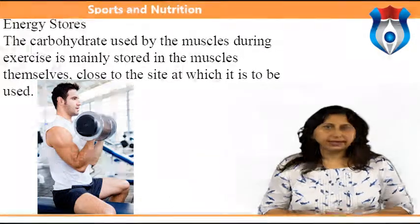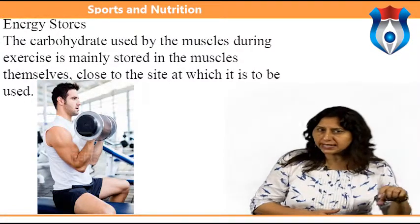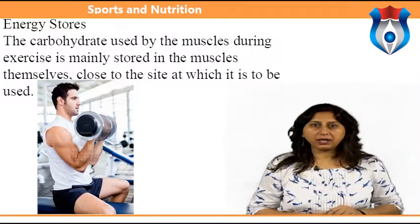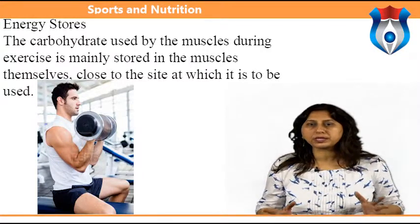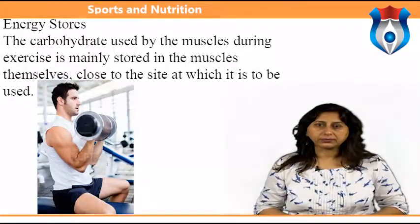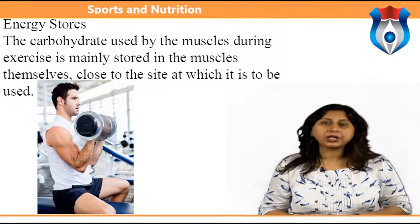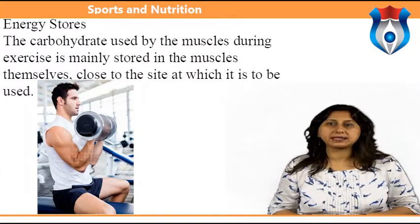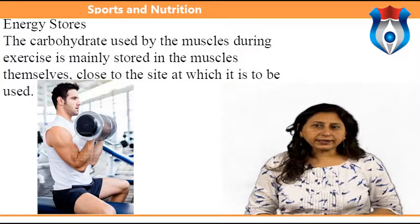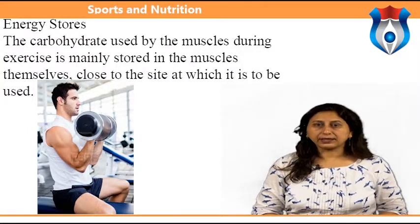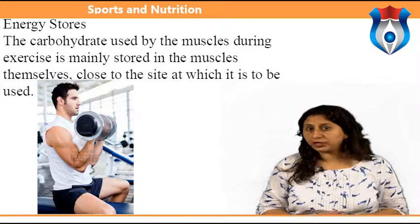The carbohydrate used by muscles during exercise is mainly stored in the muscles themselves, close to the site at which it is to be used. The stored form of carbohydrate is glycogen — a substance consisting of a large number of glucose molecules joined together. Training allows the muscles to use more of the oxygen offered to them by the circulatory system, so that energy expenditure can be more adequately covered by aerobic metabolism, allowing muscles to work at greater intensity for the same amount of carbohydrate breakdown.